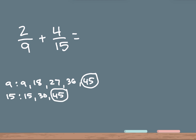So for the 9, we're going to multiply it by 5 to get to 45. And whatever you do to the bottom number, you have to do to the top number — so I'm going to multiply that by 5 as well. Then for the 15, you have to multiply it by 3 to get to 45, and whatever you do to the bottom number, you have to do the same to the top number.